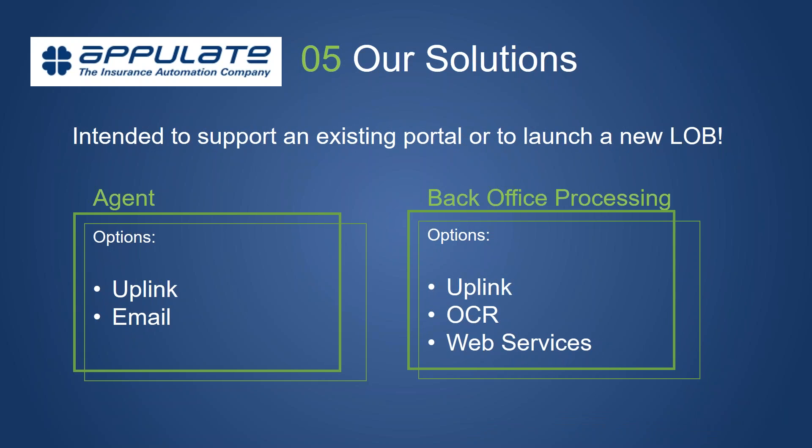As Dimitri alluded to, there are options for Uplink and email. Appulate also has its own portal design programs — we can put your programs online and build out a portal with rating and appetite guides, branded to you, very affordable. To recap: Uplink means the agent goes to their management system, hits print, and lands in your portal with all the information there. The email option means the agent emails an app, we intercept that email, pull the information, load it to the portal, and respond with a link. Within a minute the agent gets an email back saying thank you for your submission — click here to finish — and they click through to a fully pre-filled form.